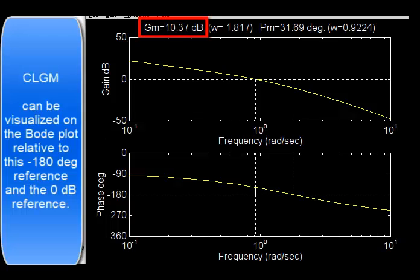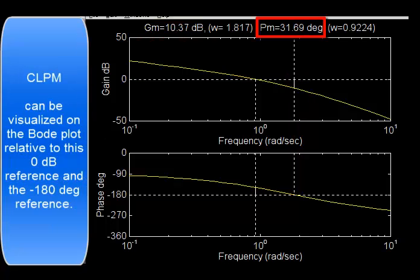Closed-loop gain margin can be visualized on the Bode plot relative to the negative 180 degree reference and the 0 dB reference. Closed-loop phase margin can be visualized on the Bode plot relative to this 0 dB reference and the negative 180 degree reference.